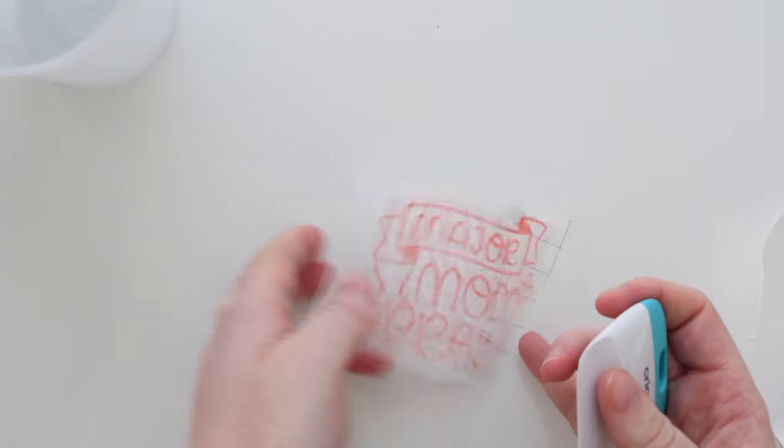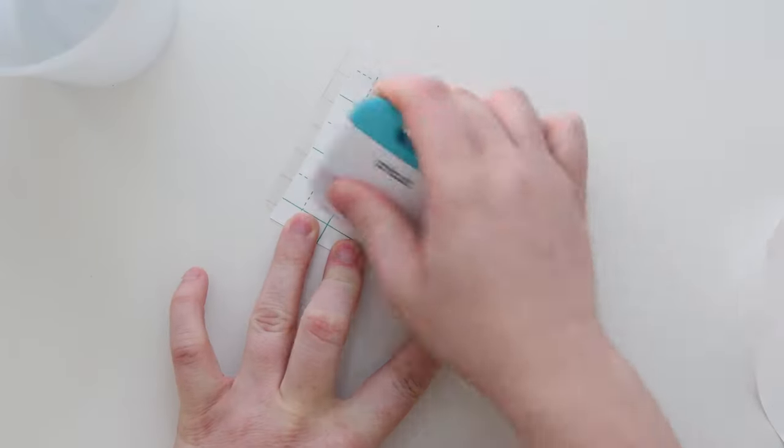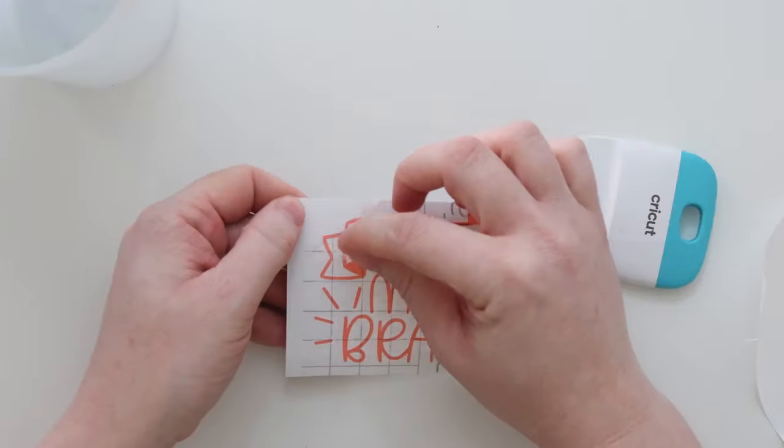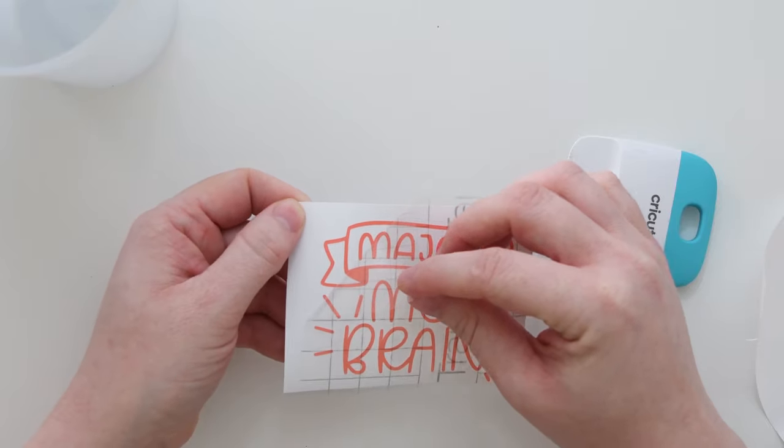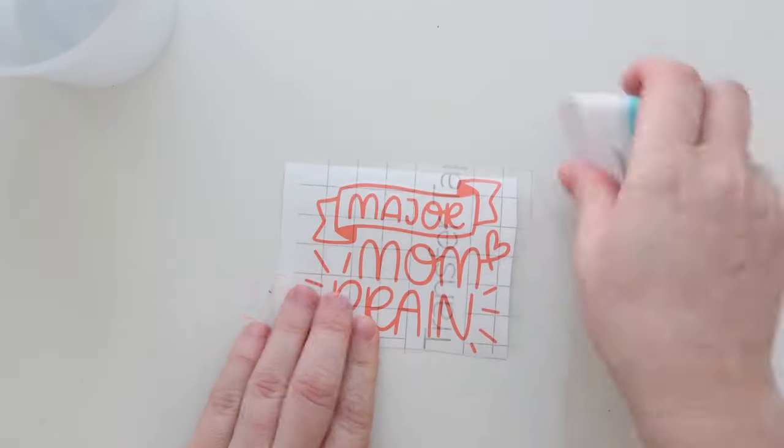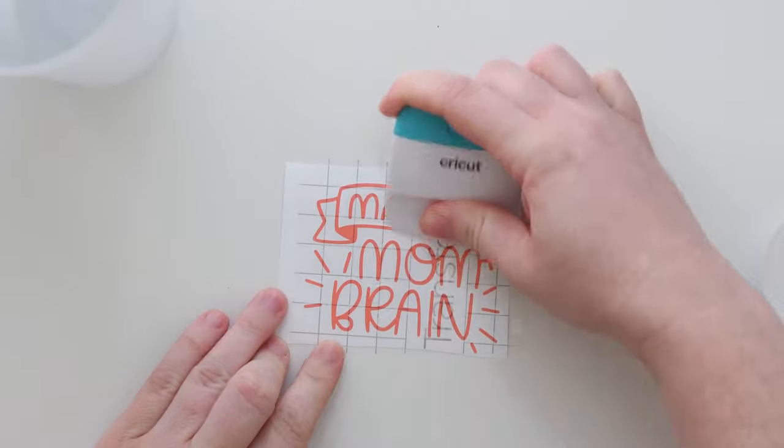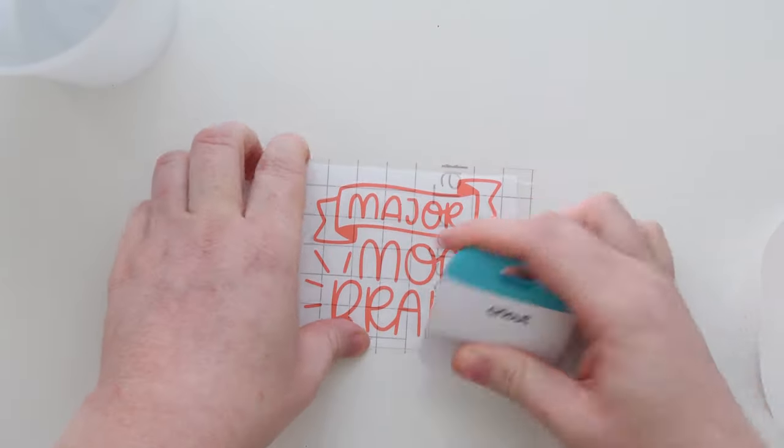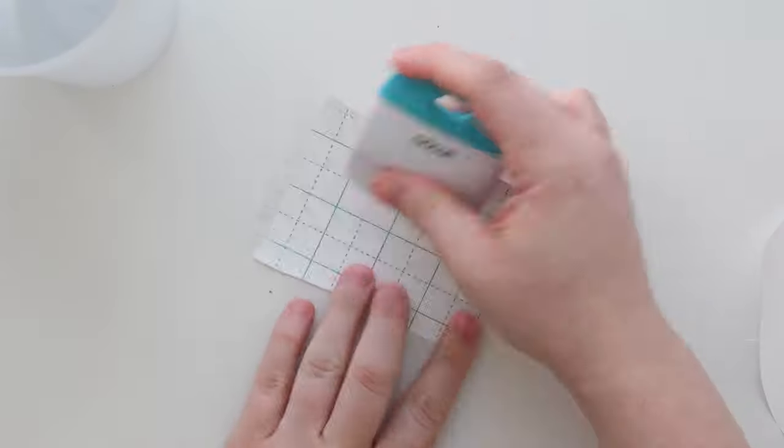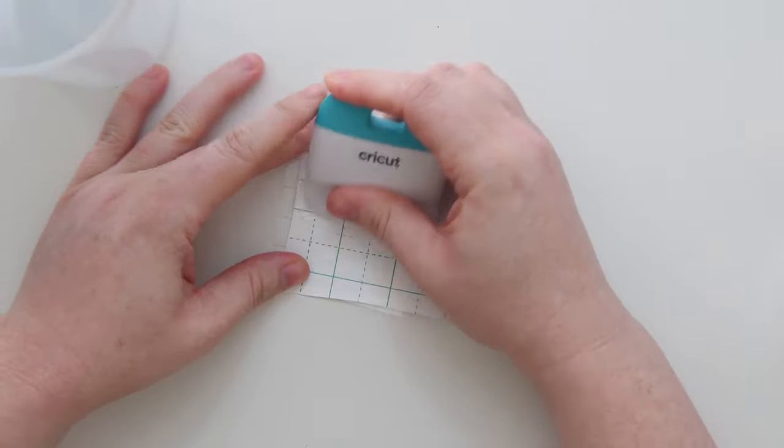Then you'll want to use your scraper tool and scrape the front and the back of your design. I always test after I've done this to see if the vinyl sticks to the transfer tape. If it doesn't I will press again and I always press from the center of the design and then press up and down on both the front and the back.